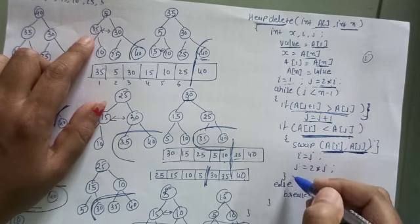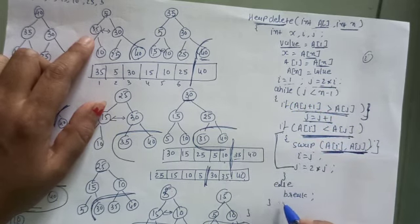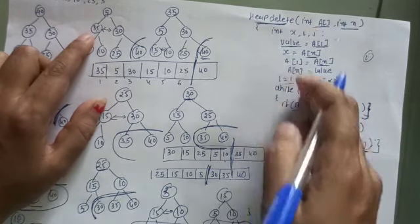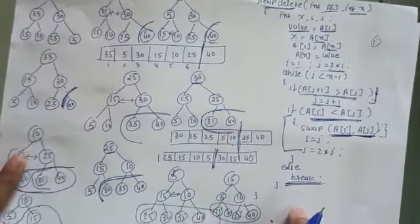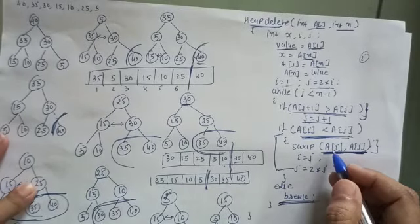And if this is not true, if the parent is not smaller than the child, then break. So this is nothing but deletion from the heap sort. So you have to implement this heap sort.